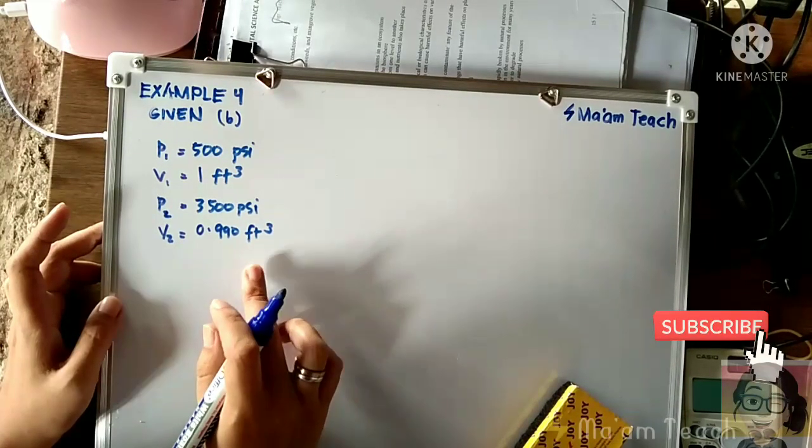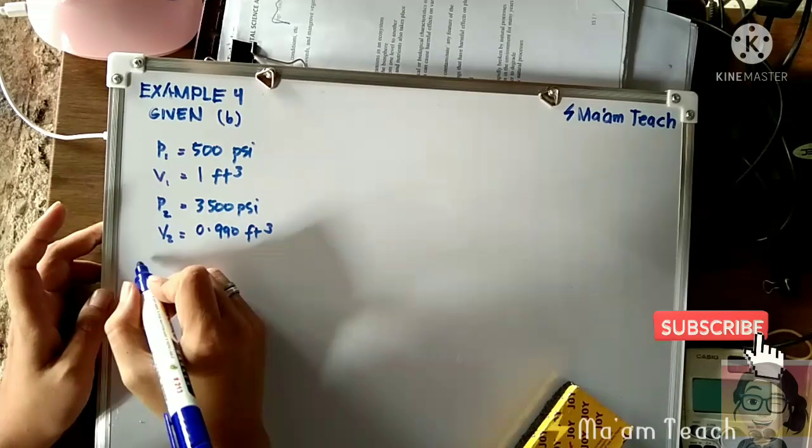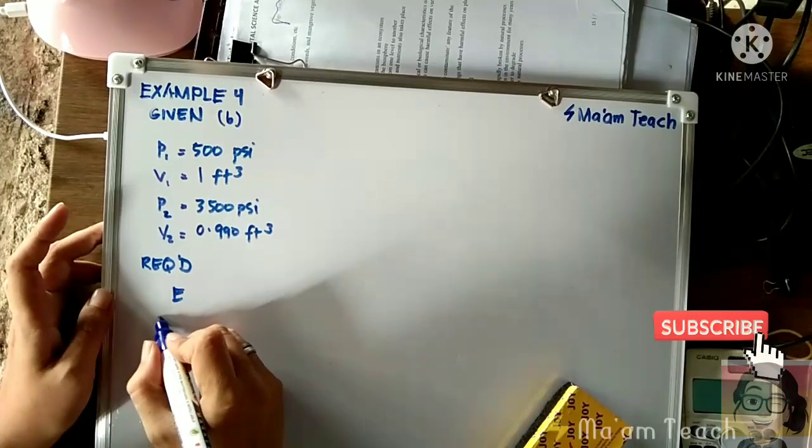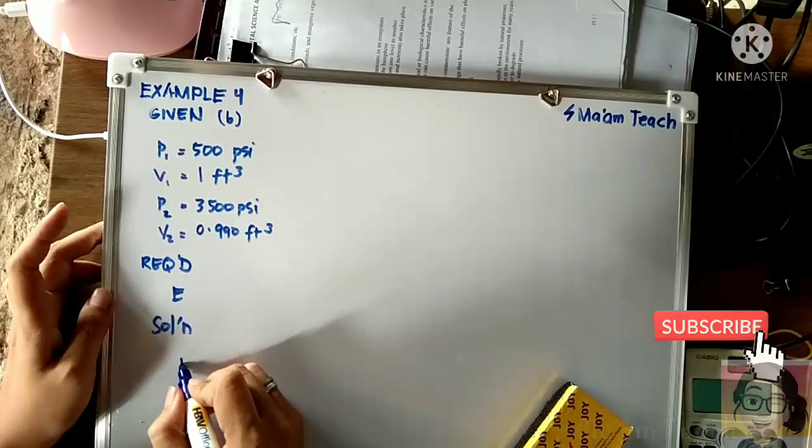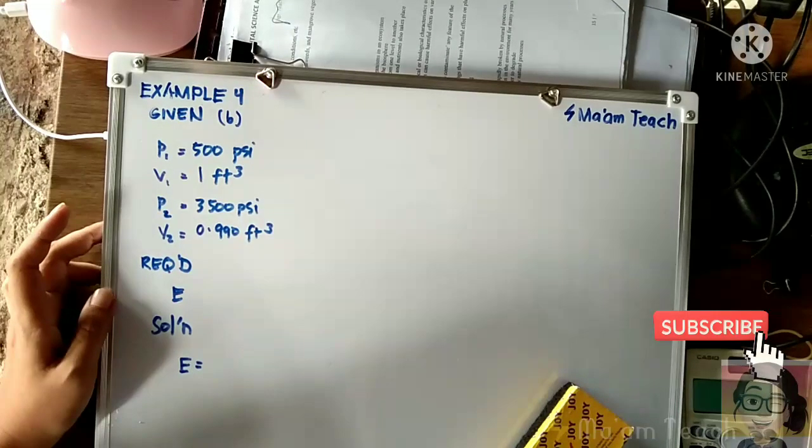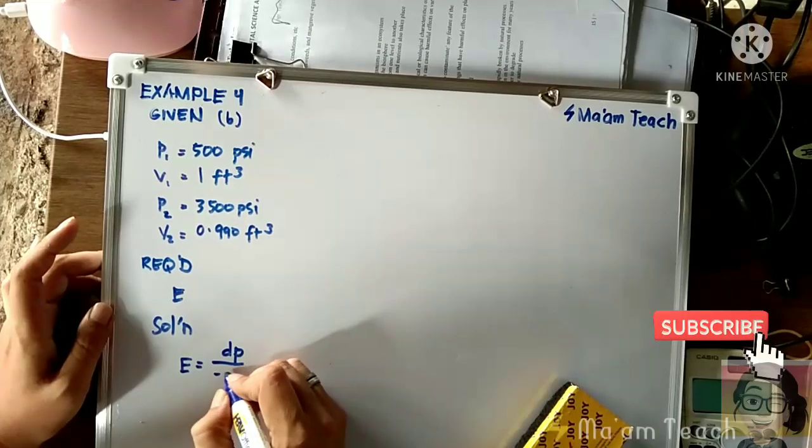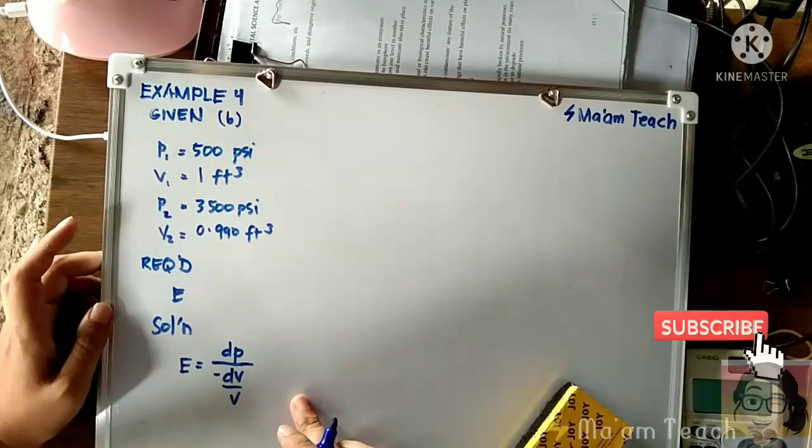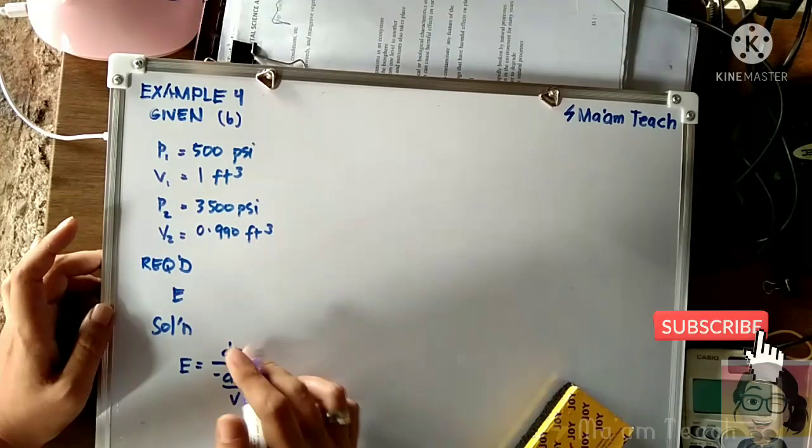So still using the same formula, which is bulk modulus of elasticity is equal to change in pressure over the negative dV over V. So again, our target is to solve for this.